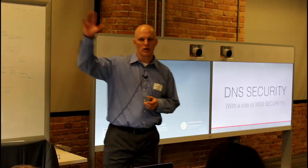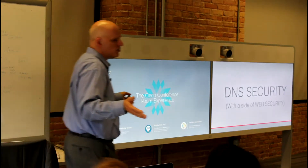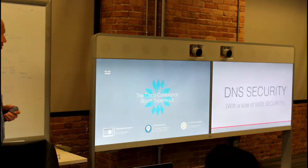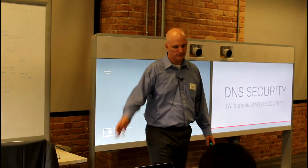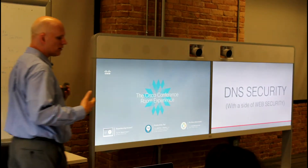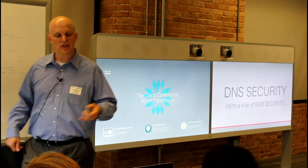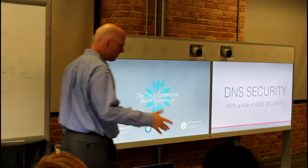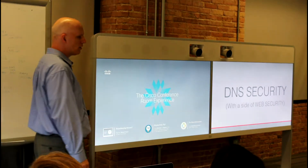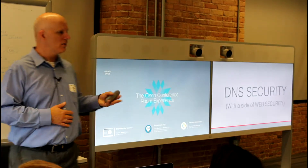DNS security, on the other hand, covers nearly everything going to the web, because anything going to the web has to turn a fully qualified domain name into an IP address first — the internet talks in IP addresses, not names. DNS translates fully qualified domain names to IP addresses, and it does so before any traffic is passed, allowing something to step in and say 'I know this is on the bad list.' In Cisco's case, Cisco Umbrella — acquired from OpenDNS — has policies like any other web security solution.